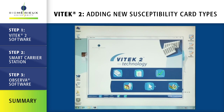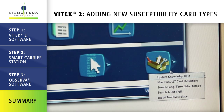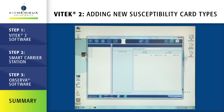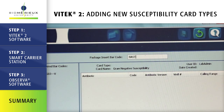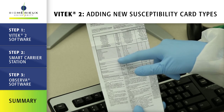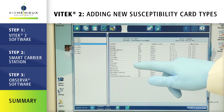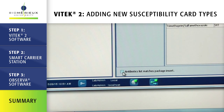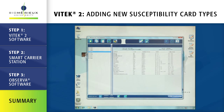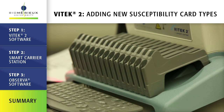Summary. To add a new AST card type to the Vitek 2 with Observa system: from the Vitek main menu, click on the utilities icon. Select maintain AST card definitions. Click the enter new AST card type icon. Scan the barcodes found on the back of the AST package insert. Compare the antibiotics listed on the package insert with those listed in the Vitek 2 software. Click the check box to confirm the antibiotics match, then click the save icon. For Vitek 2 60 and XL users, add the AST card type to the smart carrier station.